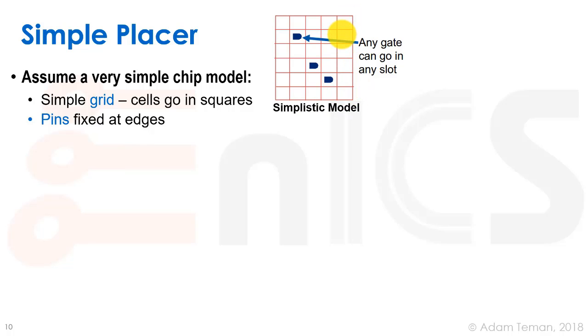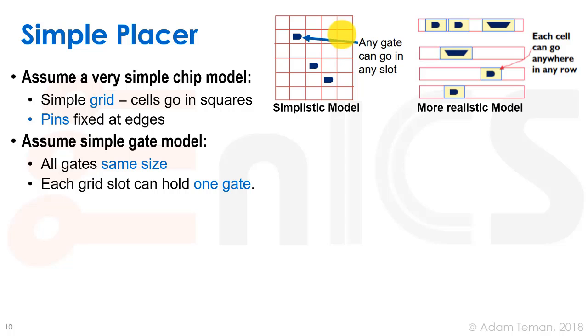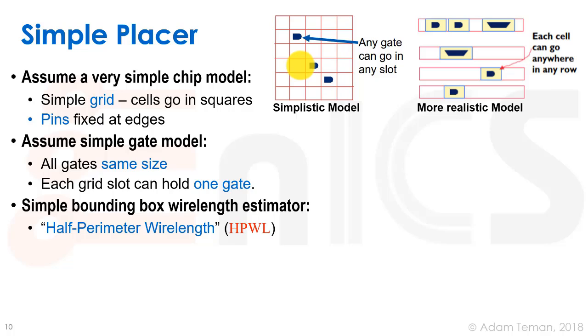We'll assume a simple gate model so all of the cells have the same size and can fit inside exactly one of these grid points. In reality, of course, the cells are of different widths but the same height, usually with our site definition. But we will assume that our cells can just go and fit inside one cell inside each grid position.